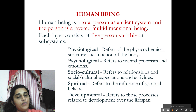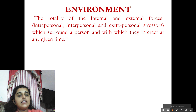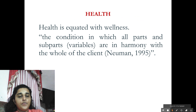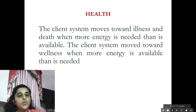In this model, Newman stresses all aspects of a human being — physiological, psychological, sociocultural, spiritual, and developmental. The environment is defined as the totality of the internal and external forces — that is, the intrapersonal, interpersonal, and extrapersonal stressors — which surround a person and with which they interact at any given time. Health is equated with wellness: the condition in which all parts and sub-parts are in harmony with the whole of the client. The client system moves toward illness and death when more energy is needed than is available, and toward wellness when more energy is available than is needed.